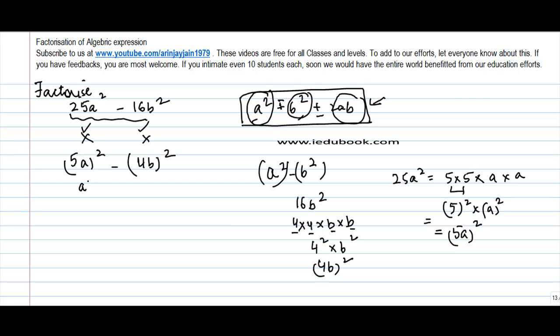Now, if I compare this, this can be written as a square minus b square. a is equal to what? 5a. So, 5a is equal to a and b is equal to 4b. Incidentally, both of them are a into b.